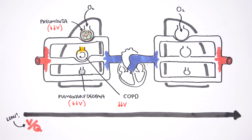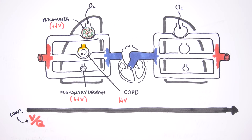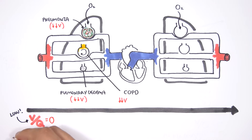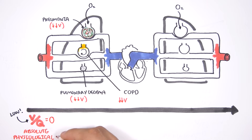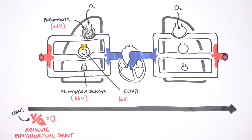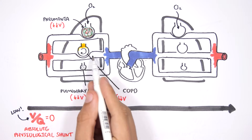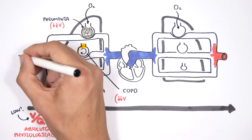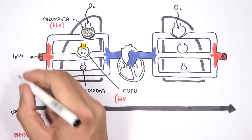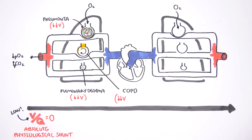On the very left end of the spectrum, you can have one area of the lung where the ventilation is zero, which would mean the VQ ratio in that area is zero. When this happens, it is called absolute physiological shunt or absolute pulmonary shunt — where you have perfusion without ventilation. With this scenario, no oxygen is coming into the alveoli, so you get net low oxygen levels leaving the pulmonary system, and you still have all that carbon dioxide because you cannot breathe it out.